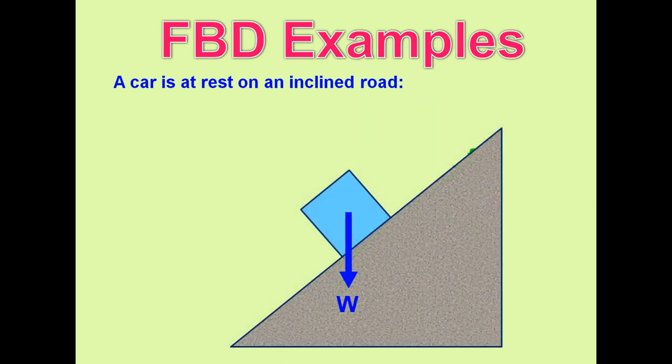Look here, inclined road and the box, the block represents the car and weight arrow is shown here and the normal force, it must be perpendicular to the plane. That's why we have to show like that. And next frictional force will be there. That force is shown like this.